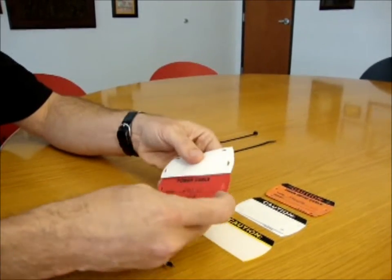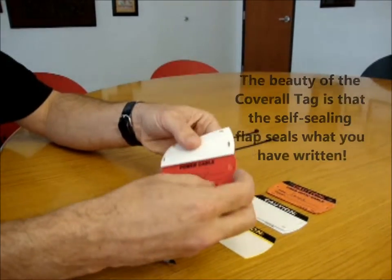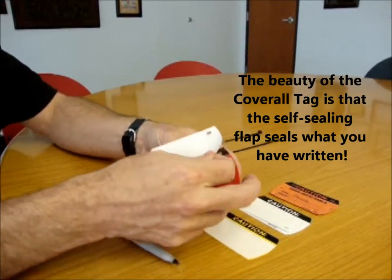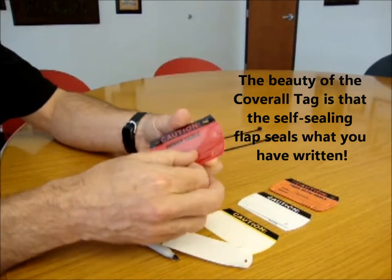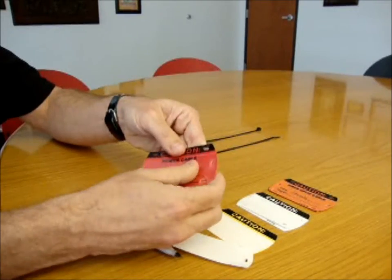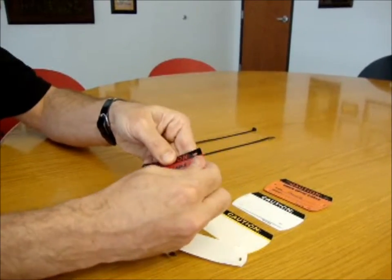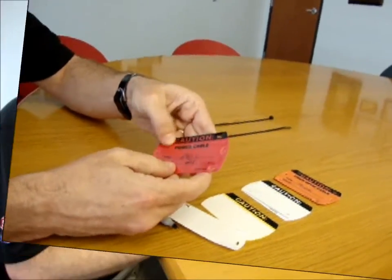Then, once your number's written there, you peel back the clear and it self-laminates, so you're protecting what you wrote. That's how the coverall tag works.